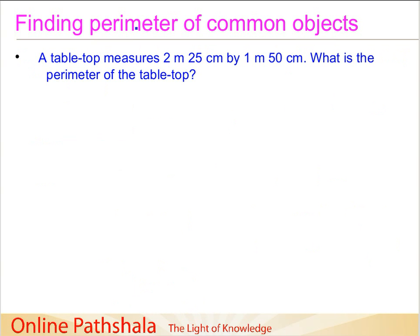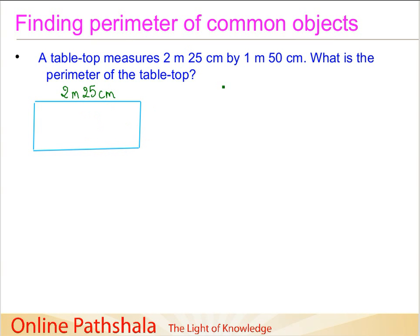Now let us look at another problem. A table top measures 2 m 25 cm by 1 m 50 cm. What is the perimeter of the table top? As usual, it is a good idea to first draw the rectangle to help visualize it. When you are comfortable solving these problems, you may not need to draw the figure, but it is always a good practice. The longer side is 2 m 25 cm and the shorter side is 1 m 50 cm.